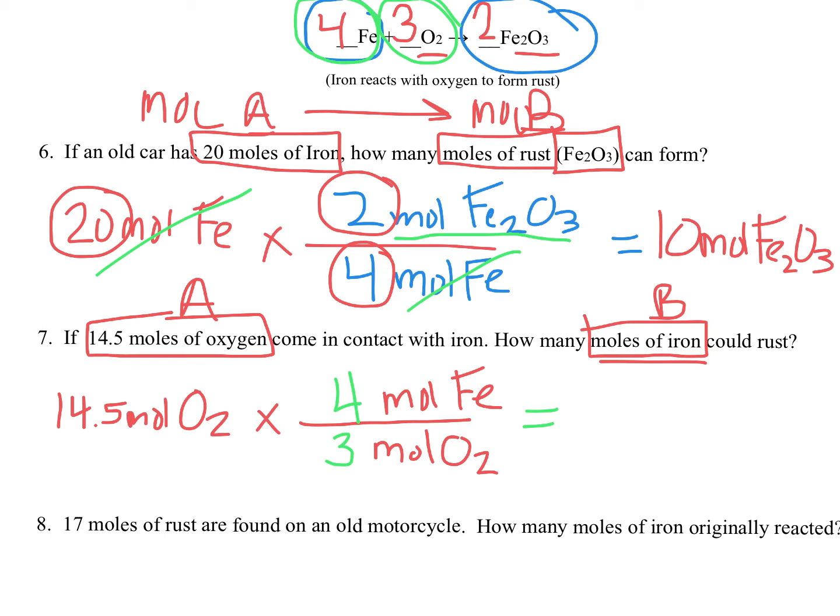I've got 3 moles of oxygen for every 4 moles of iron. So it's going to be 3 moles of oxygen for every 4 moles of iron. If we take the 14.5 moles, multiply it by 4, and divide it by 3, we get 19.3 moles of iron, Fe. There we go. Simple as that. As long as we're using our balanced equation, we can get the job done.